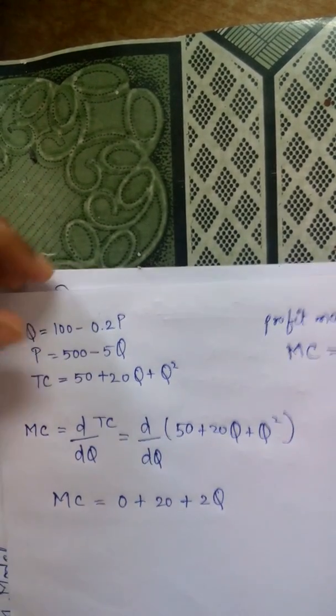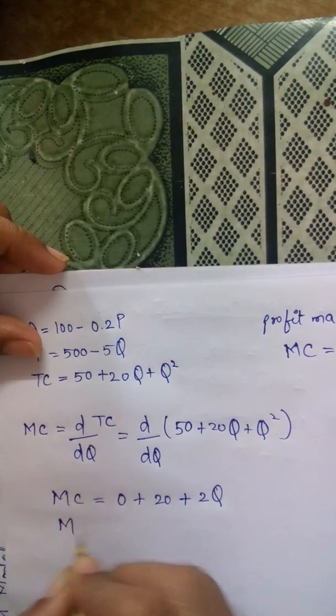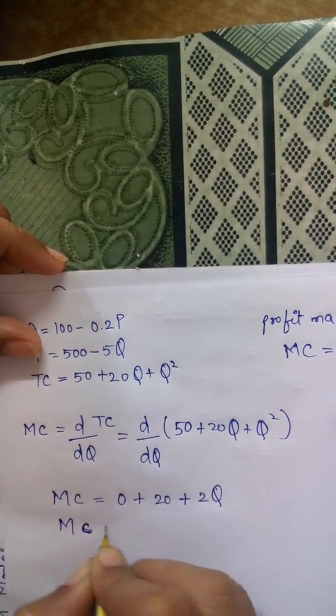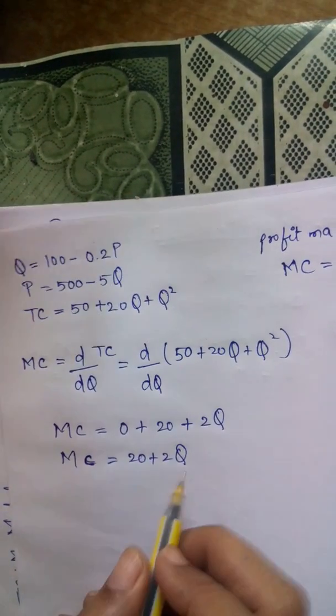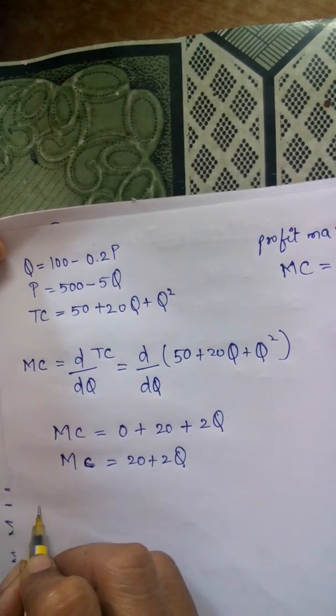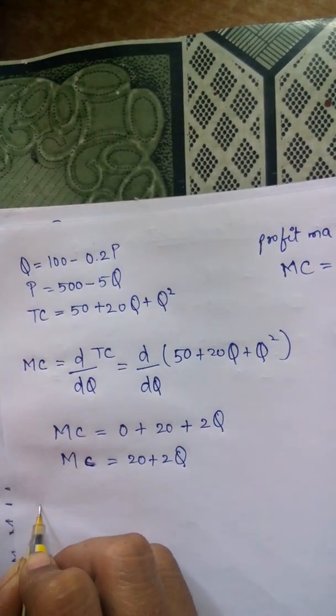So MC will be 20 plus 2Q. Now we got the MC. Now we have to find MR.